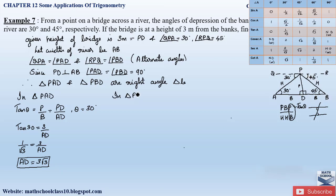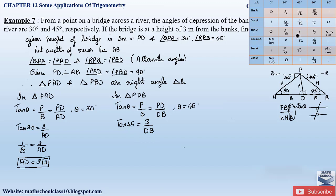Similarly, let us find the value of DB by applying the trigonometric ratio in triangle PDB. In triangle PDB, applying tan theta: tan theta = perpendicular / base = PD / DB. Here theta is 45 degrees, so tan 45 = 3 / DB. From the table, tan 45 = 1, so 1 = 3 / DB. Cross-multiplying, we get DB = 3.